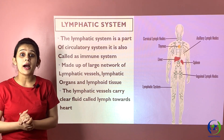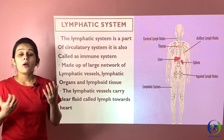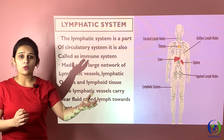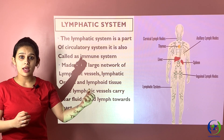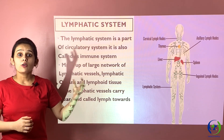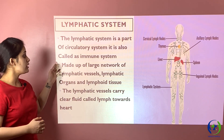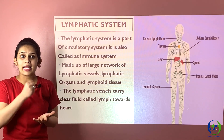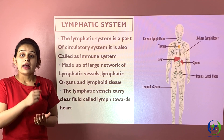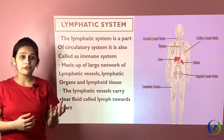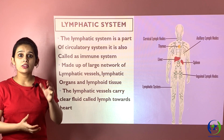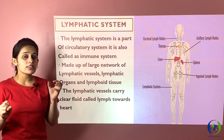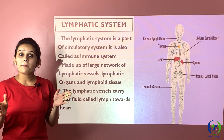The next is the lymphatic system, also called a part of the circulatory system or the immune system. When blood circulates through tissues, some amount leaks out, providing nutrients to those tissues and carrying away waste material. This leaked fluid is drained into the lymphatic vessels, where the lymph nodes or lymphoid organs trap bacteria or any harmful substances. The clear fluid — called lymph — then re-enters the circulation. Because it performs functions of both the immune system and the circulatory system, the lymphatic system is considered part of both.